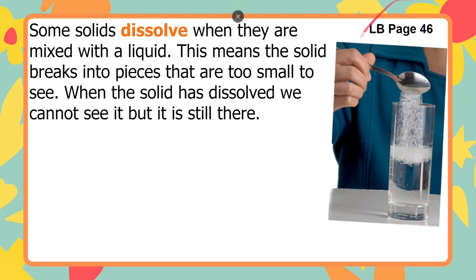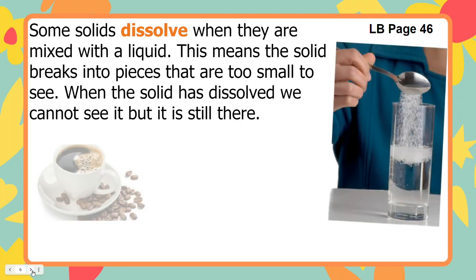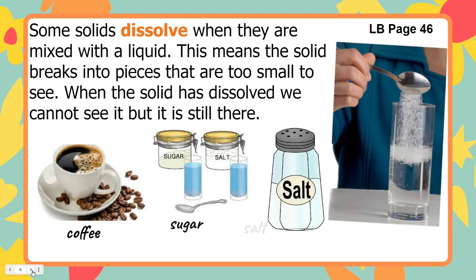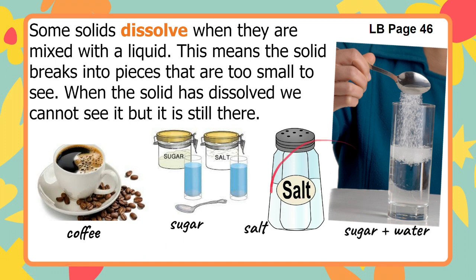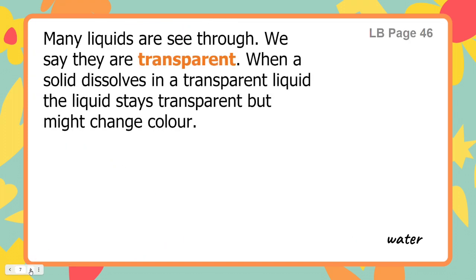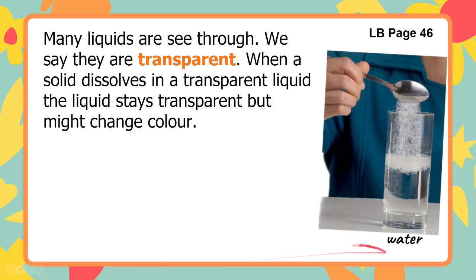Some solids dissolve when they are mixed with a liquid. This means the solid breaks into pieces that are too small to see. When the solid has dissolved, we cannot see it but it is still there. Coffee, sugar, salt mixed with water are examples. Many liquids are see-through — we say they are transparent. It means a material that you can see clearly through; it may be clear or colored.